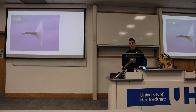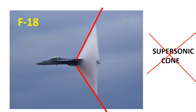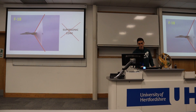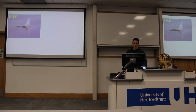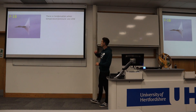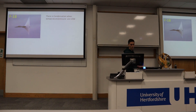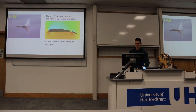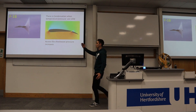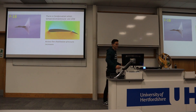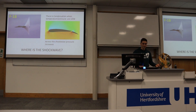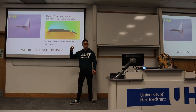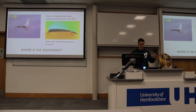We have here the F-18 Super Hornet, and here we have what looks like the supersonic cone. But no — it is not the supersonic cone. This is the third misconception, and it is so, so important. Why do I know that this is not the supersonic cone? Because we know that condensation appears when pressure and temperature are low, like on the upper part of the wing. But we also know that across the shockwave, pressure increases. So how could it be a shockwave? It's not a shockwave. Where is the shockwave? Just there — because condensation is disappearing suddenly, and this is because across the shockwave, temperature is increasing and therefore condensation disappears.